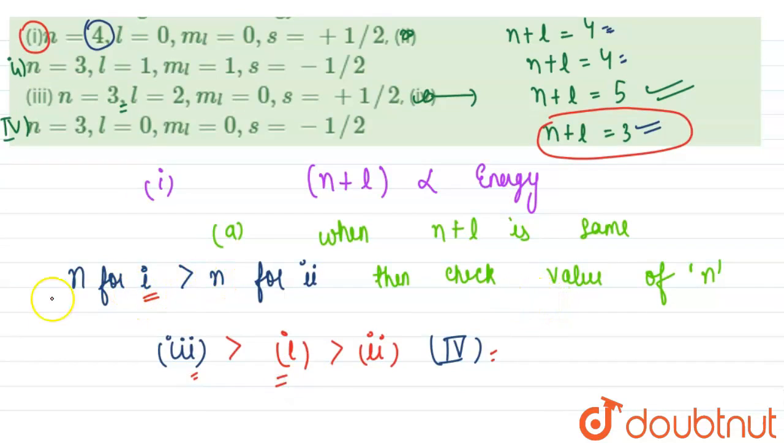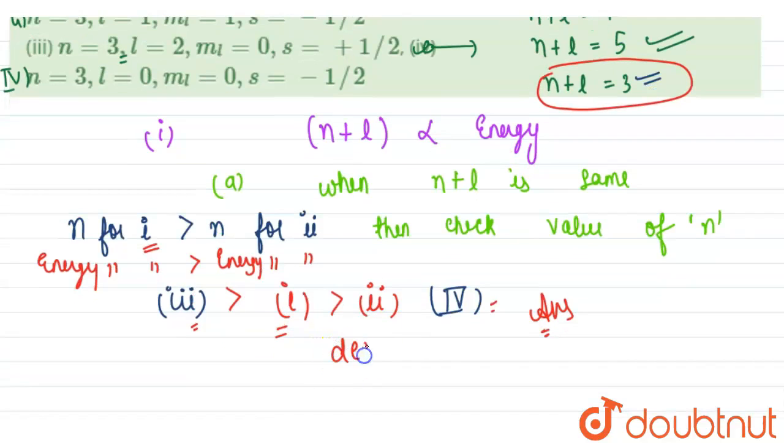So energy for first will also be higher than energy for second. So this is our answer for decreasing energy of quantum numbers.